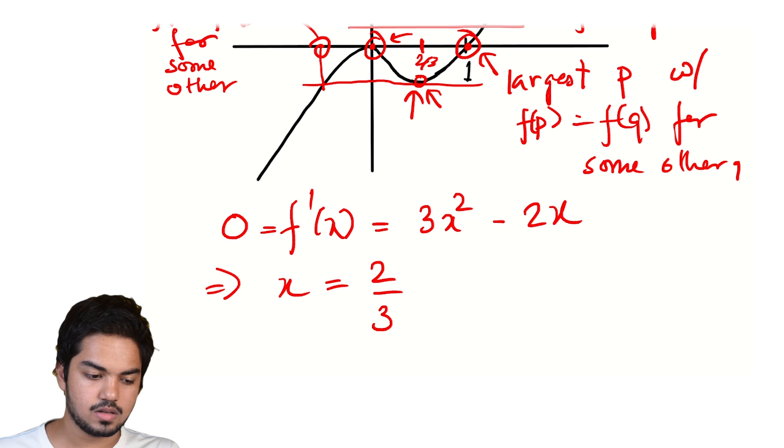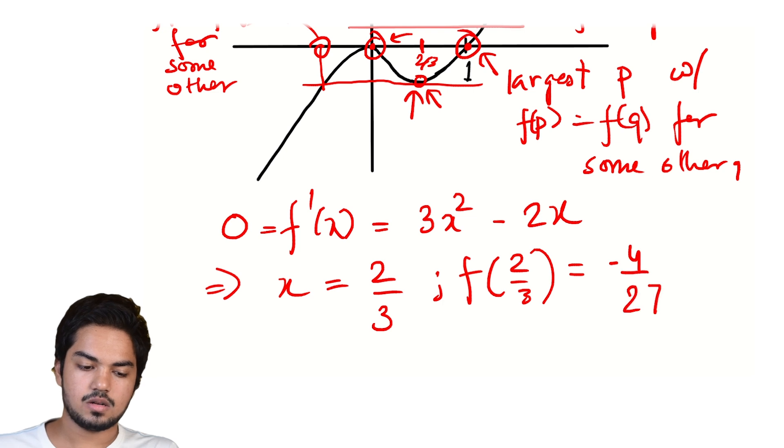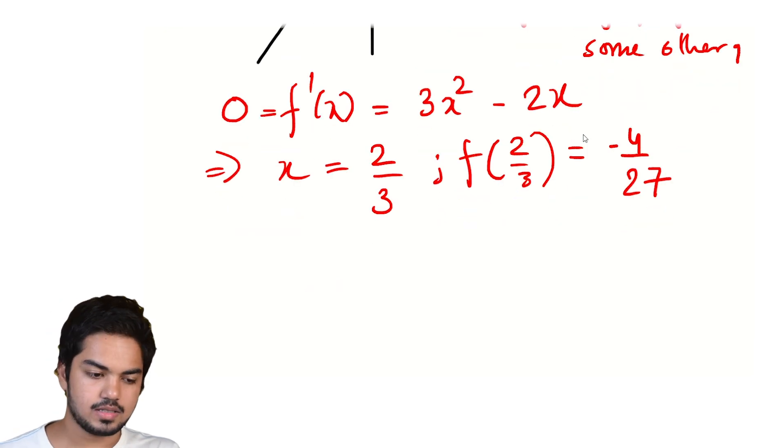This point. At this point we have the local minima. And so we simply look for the other point with the same value of whatever this is. What is this value? f(2/3) is simply, and you can plug it in and check, is just -4/27.